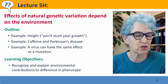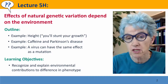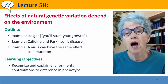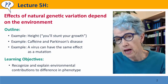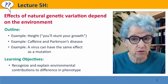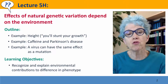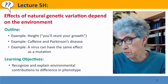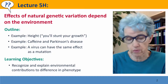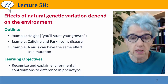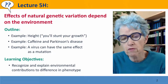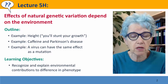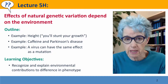Hi, everyone. Welcome back to Useful Genetics. This is lecture 5-H. We're going to think about how the environment contributes to phenotype, thereby confounding and sometimes masking the effects of natural genetic variation. We'll think about the effects of the environment on height, the effects of caffeine on Parkinson's disease, how a virus can have the same effects as a mutation, and we'll try to integrate all of these into the concept of heritability.